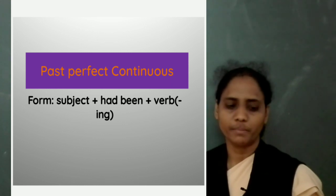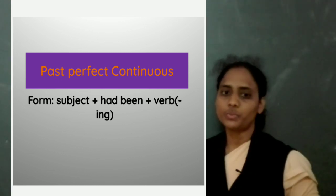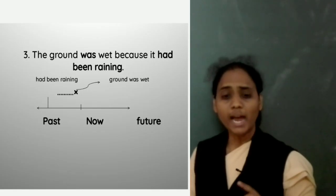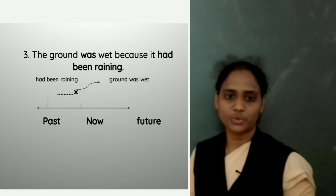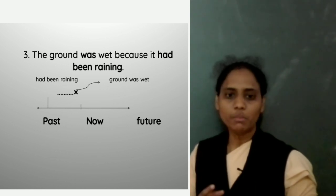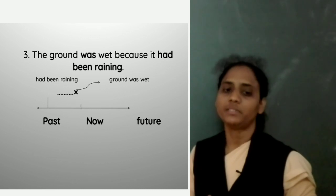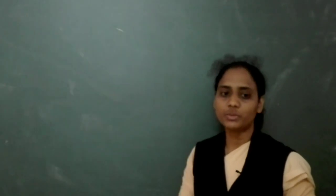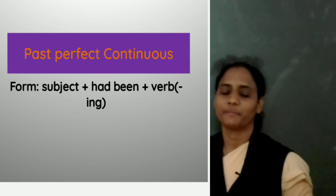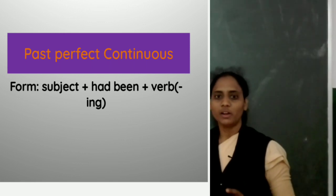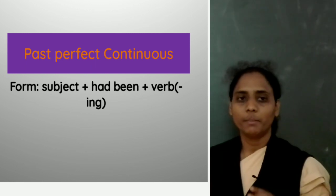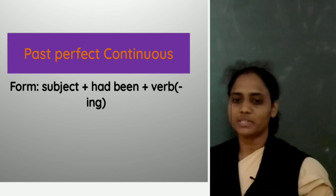Here is another example: The ground was wet because it had been raining. It had been raining first, and so the ground was wet. Remember that the past perfect continuous tense is used to talk about a continuous action in the past before another finished action. So this is all about the past perfect continuous tense.